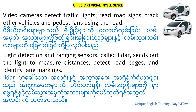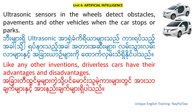Light detection and ranging sensors, called LIDAR, send out light to measure distances, detect road edges and identify lane markings. Ultrasonic sensors in the wheels detect obstacles, pavements and other vehicles when the car stops or parks.